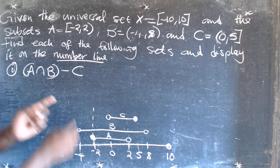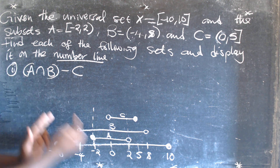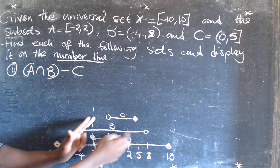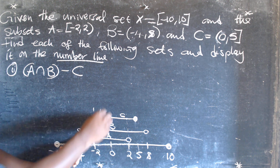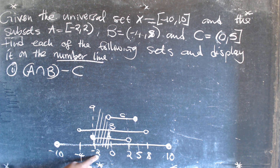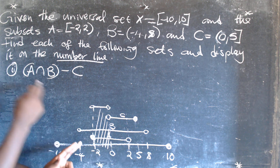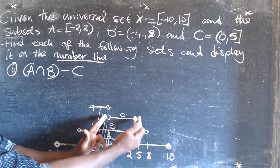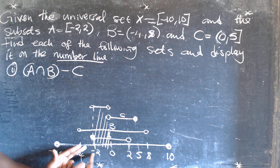Since this is A intersection B, we are now subtracting C — the set difference. You remove C from A intersection B. When you remove C from A intersection B, this part of C is removed, and what remains is this part here, from negative 2 to 0.